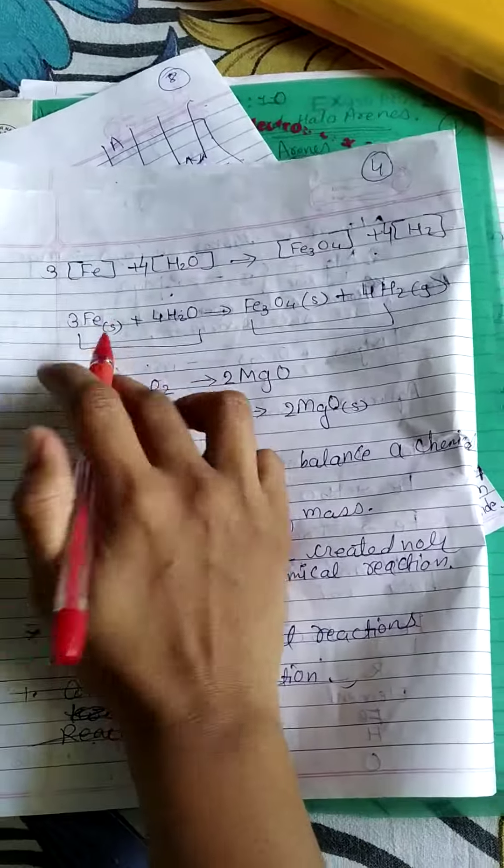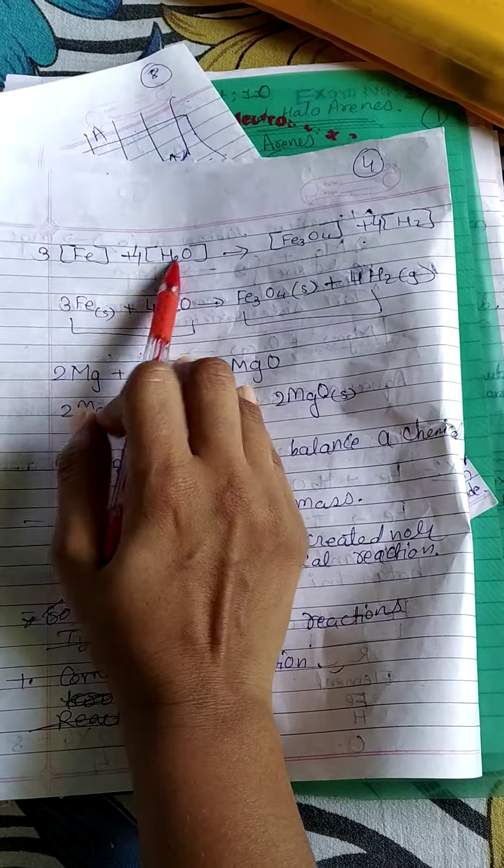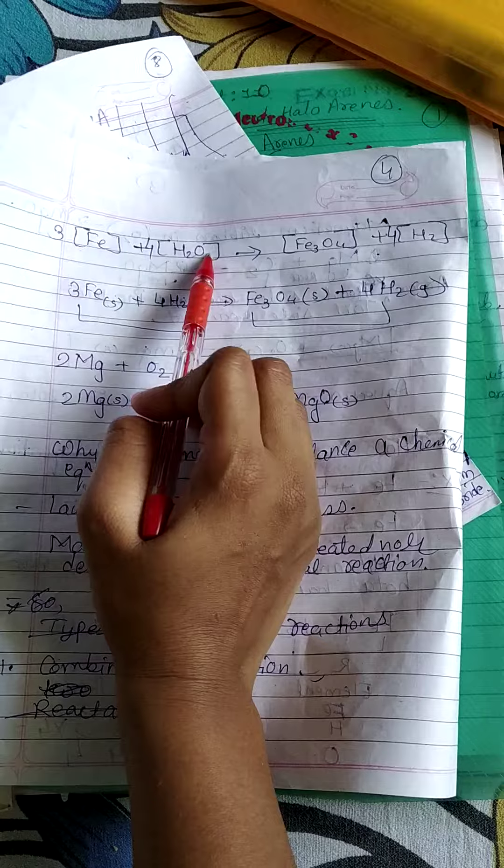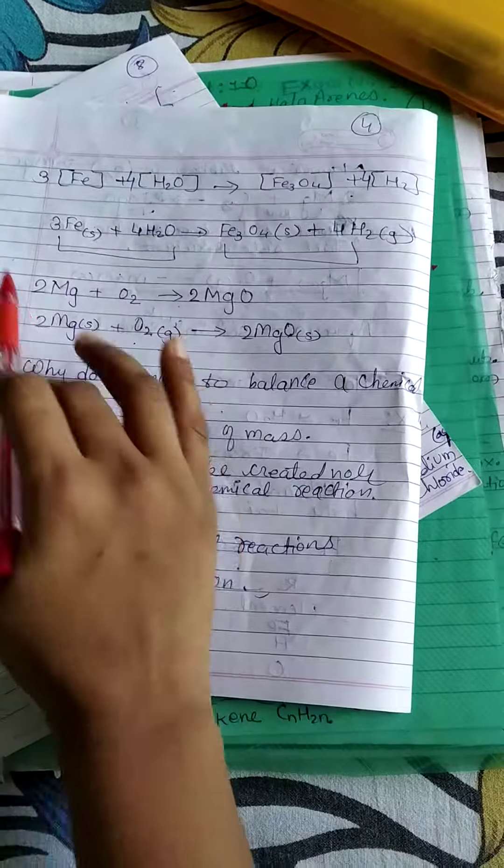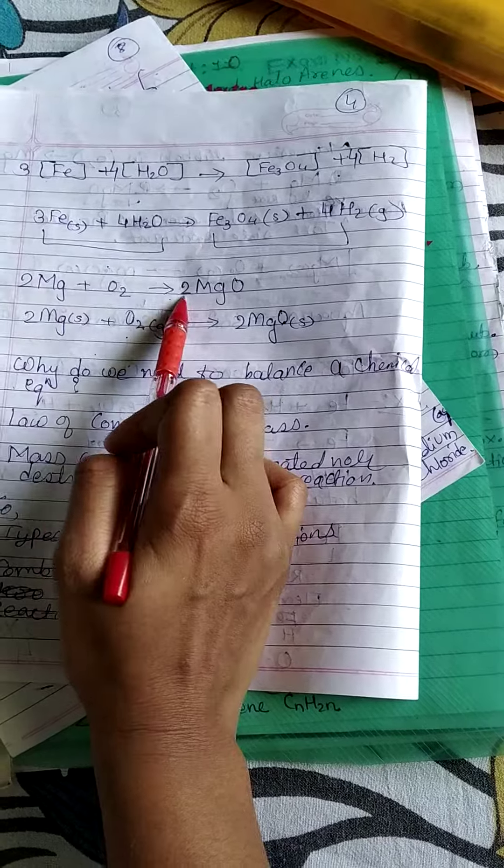Now the reaction is 4Fe + 8H2O gives Fe3O4 + 4H2. The reaction is balanced. In this way, oxygen is also balanced with 2O.